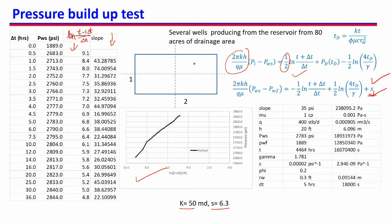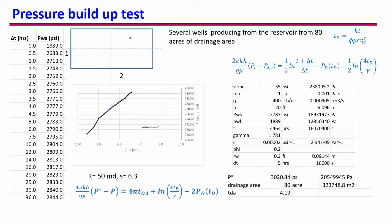The skin factor found was 6.3. Now we want to find the average pressure p̄, which involves some interesting new concepts. I have written here the buildup test equation and another equation derived previously that relates p̄ to p*. We can find p* by extending the straight line on the buildup plot, and when the x-axis term becomes zero, the curve intersection gives p*.